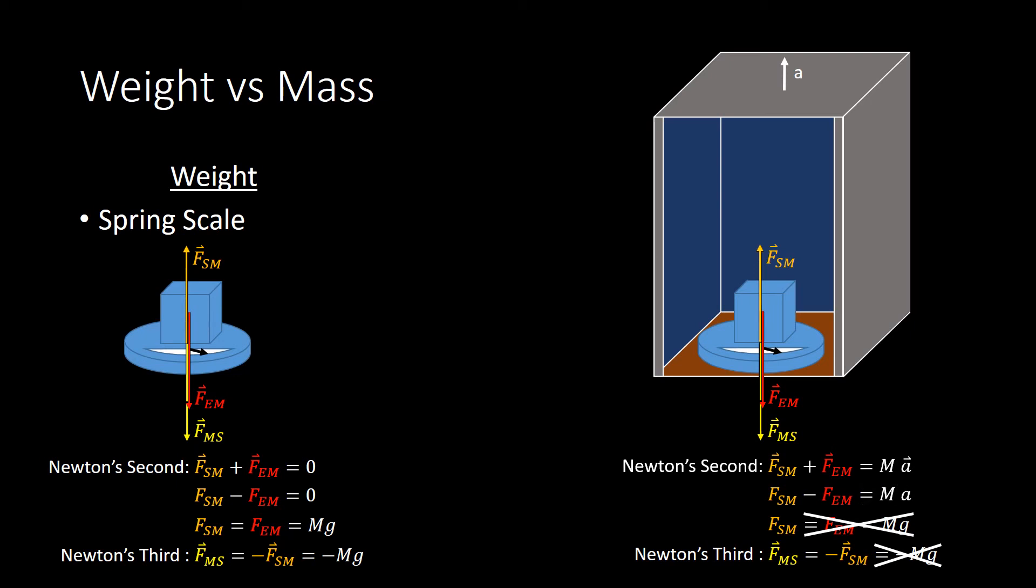When we rearrange this time, we have to keep that Ma term around. F_em is still mg. So, we can go ahead and put that in. And then, when we apply Newton's third law and simplify things a little bit, we get force by the mass on the scale is now negative m times the quantity g plus a. We've changed the effective gravitational acceleration from g to g plus a.